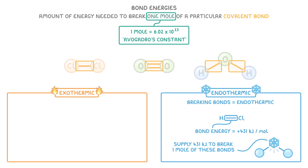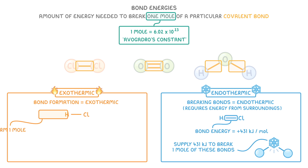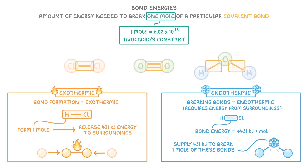Breaking bonds is actually an endothermic process, because it requires energy from the surroundings. On the other hand, bond formation is exothermic. So if we were to form one mole of hydrogen chloride bonds, it would release 431 kilojoules of energy to the surroundings.